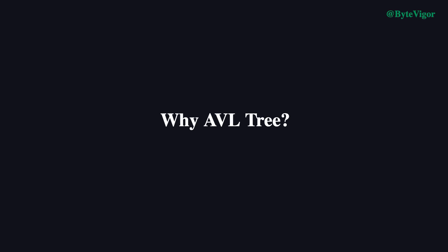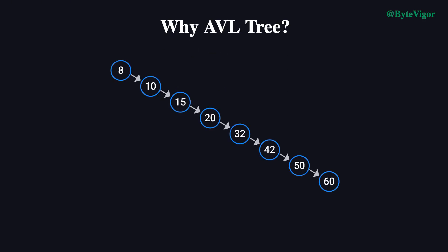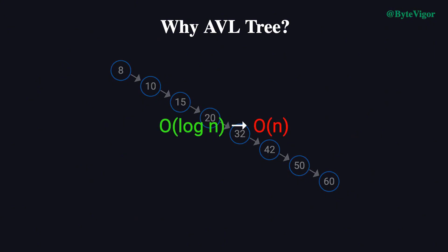First, let's address an important question: why do we need AVL trees? In a standard binary search tree (BST), the structure depends entirely on the order in which nodes are inserted. If nodes are added in strictly ascending or descending order, the tree can degrade into a linear structure, essentially becoming a linked list. This degradation causes the time complexity of operations like searching, inserting, and deleting to drop from the ideal O(log n) to O(n).